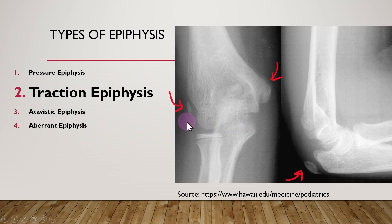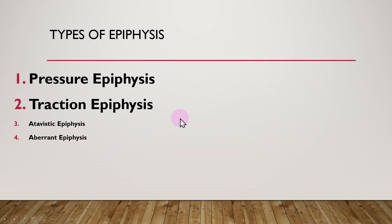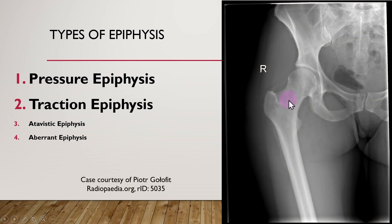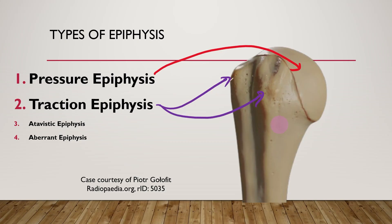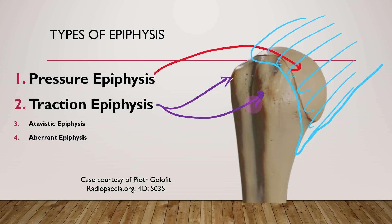Let us quickly compare pressure and traction epiphyses. The head of the femur is a pressure epiphyses, while the greater trochanter and lesser trochanter are traction epiphyses because they are locations of muscle pulls. Note the location of the capsule — the pressure epiphyses is within the capsule, meaning it is intracapsular, while the traction epiphyses are outside the capsule, that is extracapsular. The same applies to the proximal end of the humerus: the head of the humerus is a pressure epiphyses and the greater and lesser tubercles are traction epiphyses.